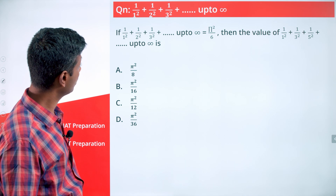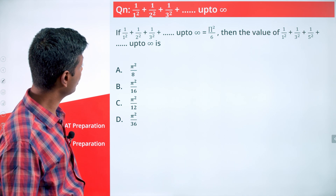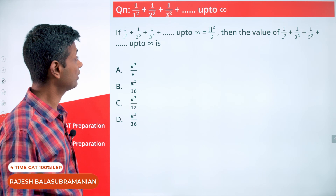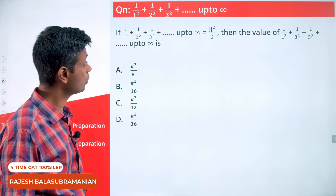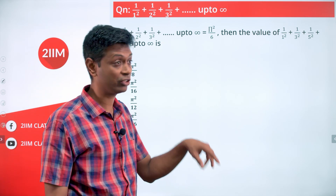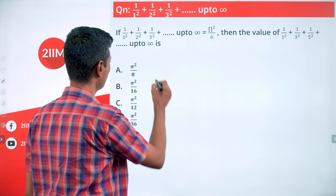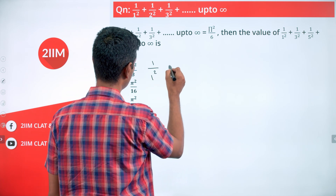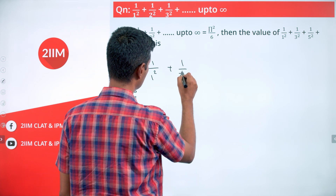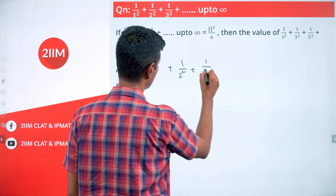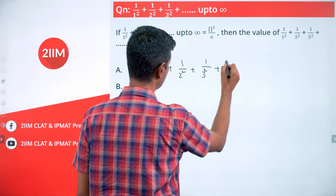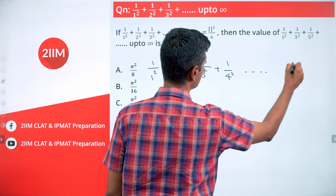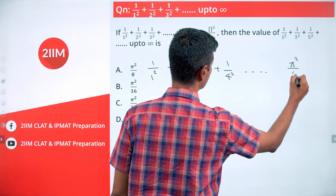What is the value of 1/1² + 1/2² + 1/3² all the way up to infinity? It is π²/6. Now, what is the value of 1/1² + 1/3² + 1/5² and so on? This sounds very complicated, but is actually a very simple question. We know that 1/1² + 1/2² + 1/3² + 1/4² all the way to infinity equals π²/6.